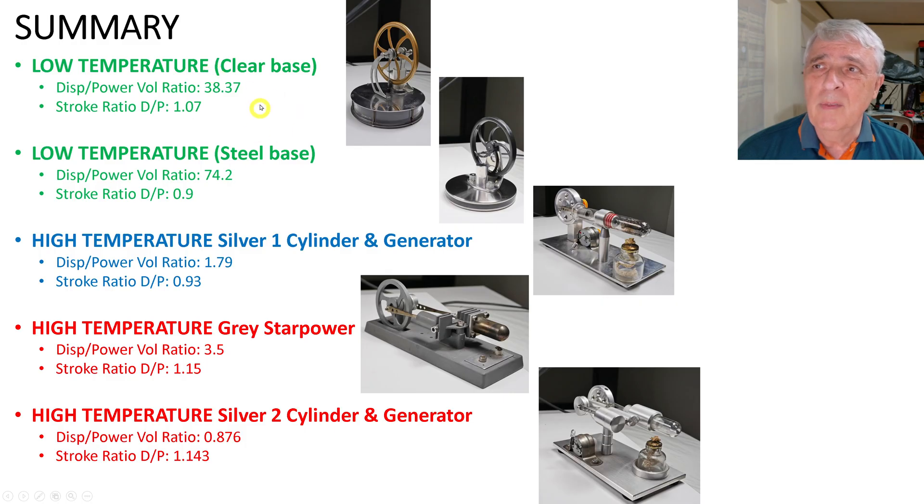Here is a summary of the things that I think are most interesting, and that are these ratios. If we look at the low temperatures, the first one, which is the clear base, the displacer to power volume ratio is 38.37, and the stroke ratio is 1.07. The second one, the displacement power volume ratio is about twice as much as this one, which is a bit surprising. And the stroke ratio is roughly the same.